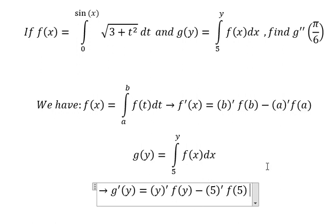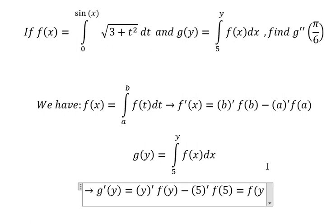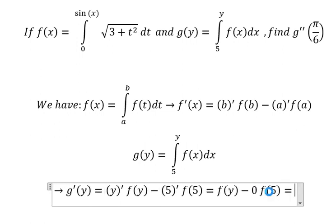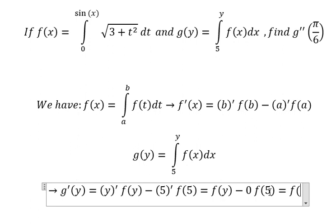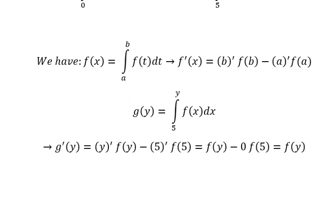For this part, we have number one times f(y). Since this is a constant, we get zero, so we have f(y). Now it will look like this.